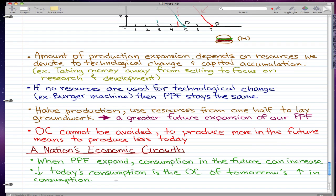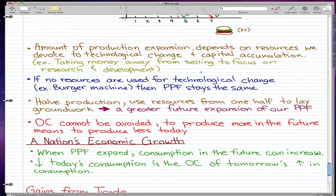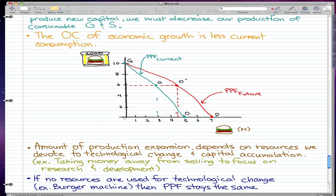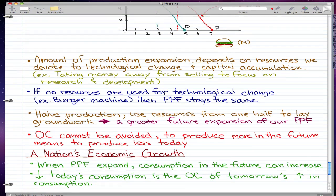Now lastly, I want to talk a little bit about a nation's economic growth, which is just a recap of the things that we talked about. We already know that when the PPF expands, consumption in the future can increase. That means the future gets better—our PPF expands outward to the PPF future, to this red line. A decrease in today's consumption is the opportunity cost of tomorrow's increase in consumption. We have to decrease the resources we're using today and put some resources into the future to increase the consumption that we're allowed in the future.